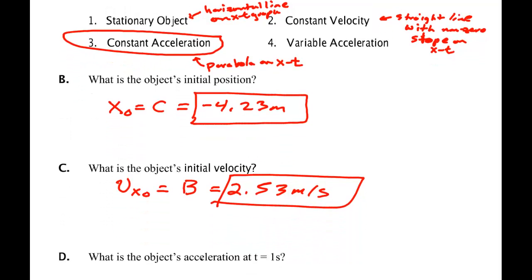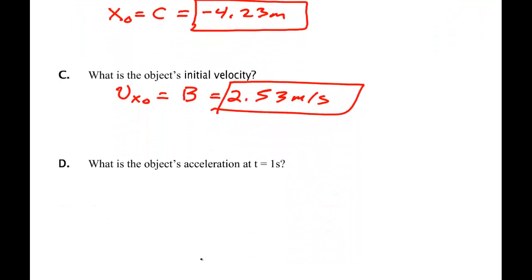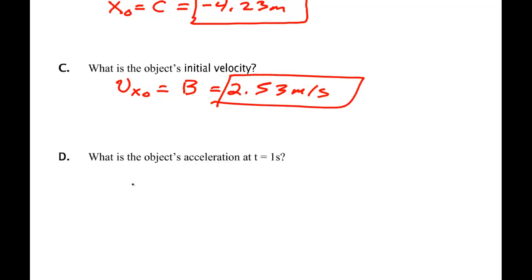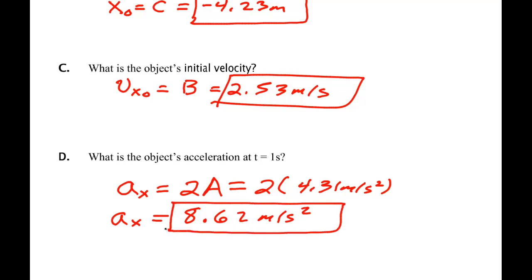Then part C, what's the object's acceleration? AX is 2 times A, which is 2 times 4.31 meters per second squared. So AX is equal to 8.62 meters per second squared, assuming that I have done that calculation correctly in my head.